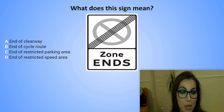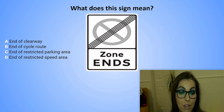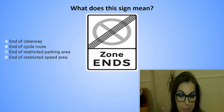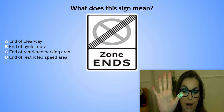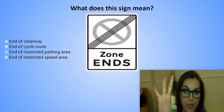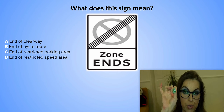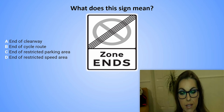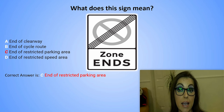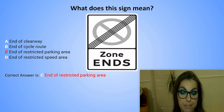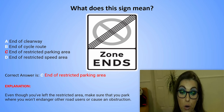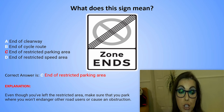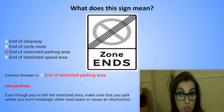What does this sign mean? A. End of clearway. B. End of cycle route. C. End of restricted parking area. Or D. End of restricted speed area. The correct answer is C. End of restricted parking area. Explanation: Even though you've left the restricted area, make sure that you park where you won't endanger other road users or cause an obstruction.